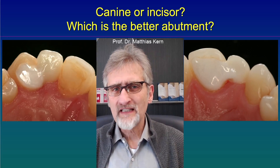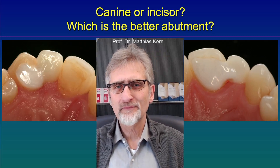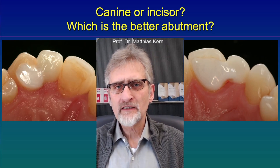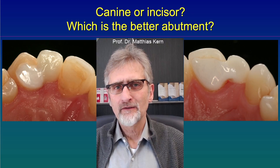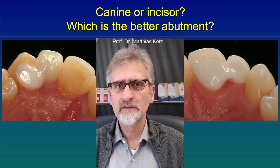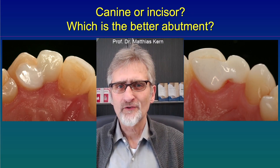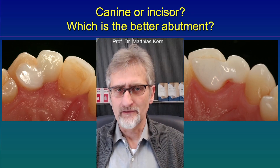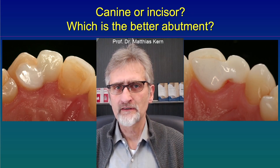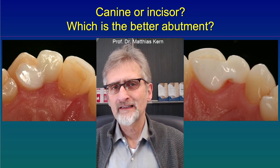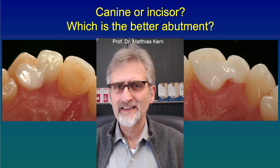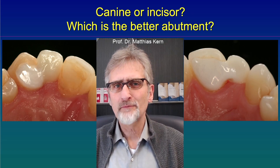Hello. Besides lower second premolars, maxillary lateral incisors are the most often congenitally missing teeth. They are often replaced with cantilevered single-retainer resin bonded bridges.